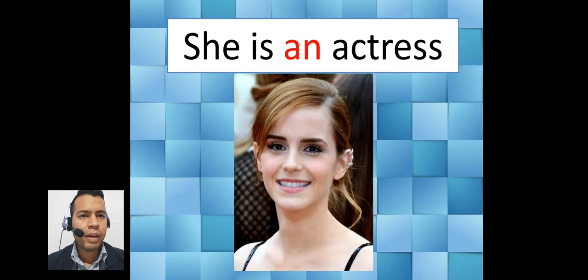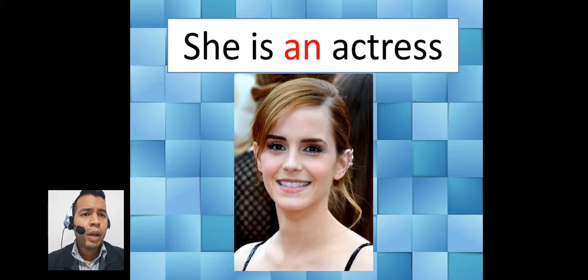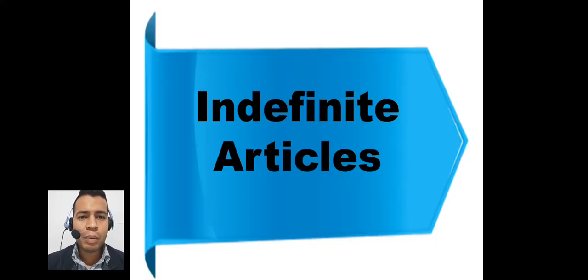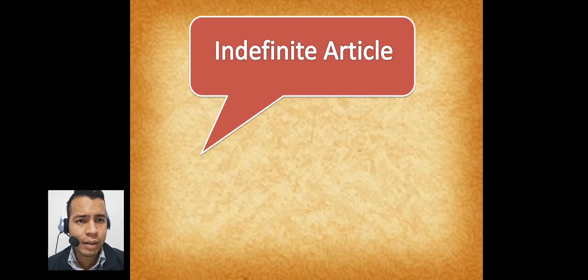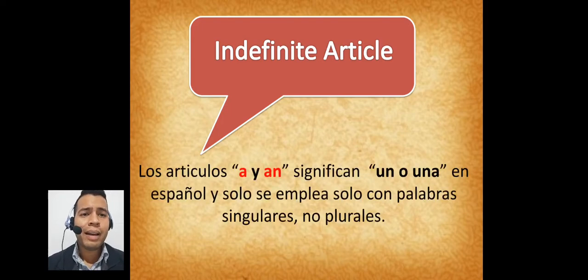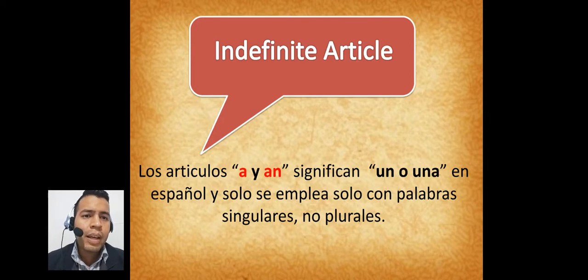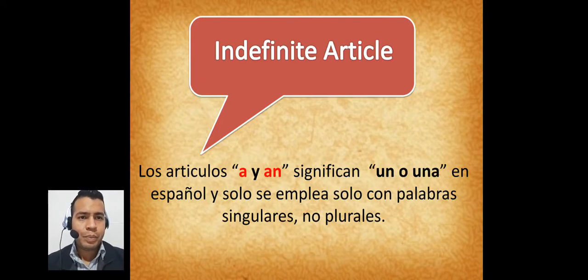Ciertamente en nuestra clase pasada hablamos de las ocupaciones. Y aquí tenemos dos oraciones con dos ocupaciones, pero hay dos palabras que están resaltadas que son 'an' y 'a'. Esas dos palabras se llaman indefinite articles — artículos indefinidos. Los artículos 'a' y 'an' significan 'un' o 'una'. Ambos significan lo mismo.